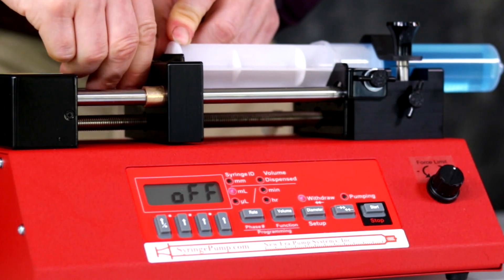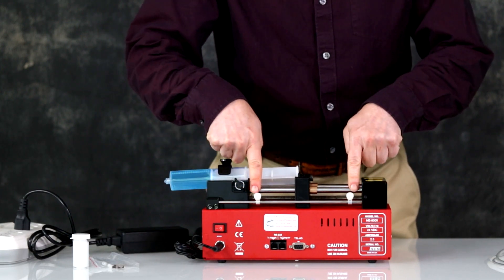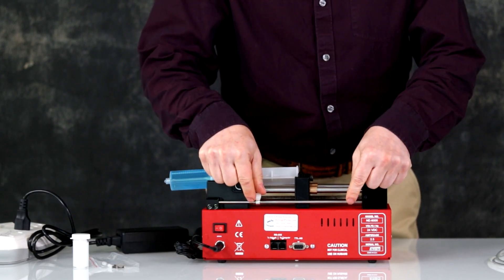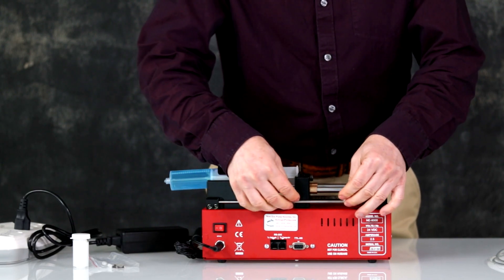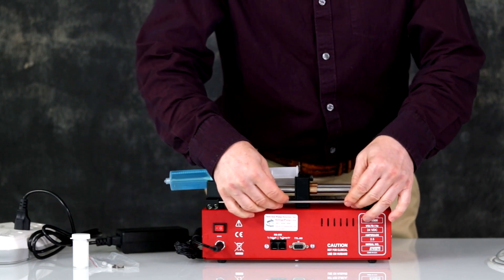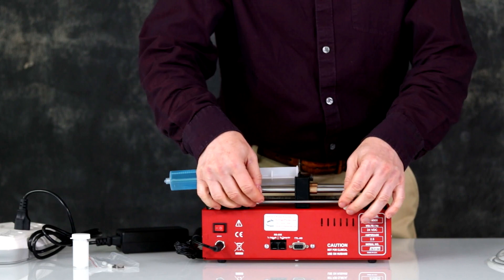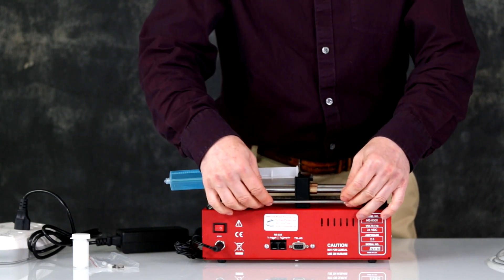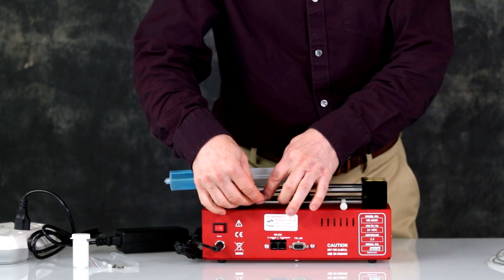NE-8000 setting limit switches. At the rear of the pump are the limit switches. Turn the screws to loosen for adjustment. Limit switches limit the travel of the pump and can be used in programs to stop the pump at certain points while changing directions. Position them and tighten into place.